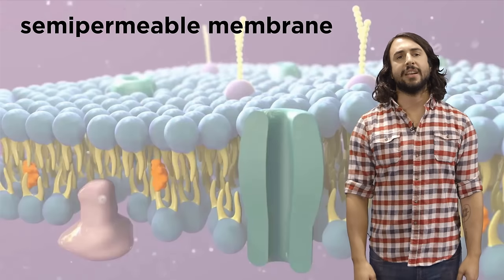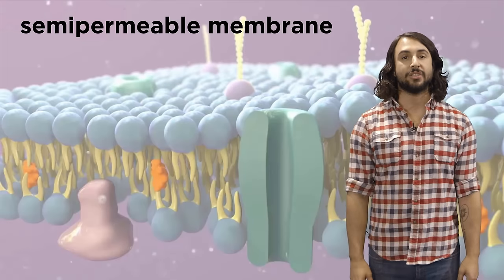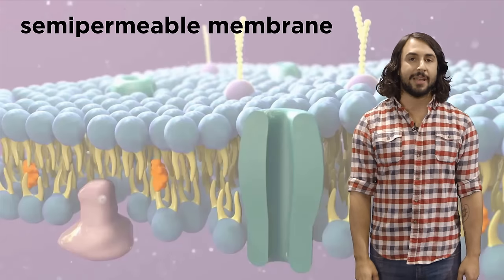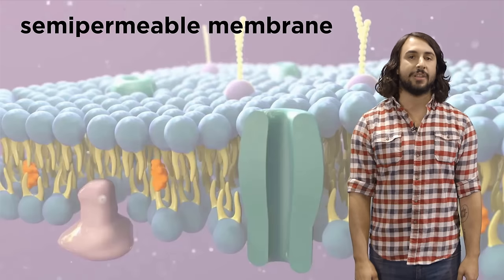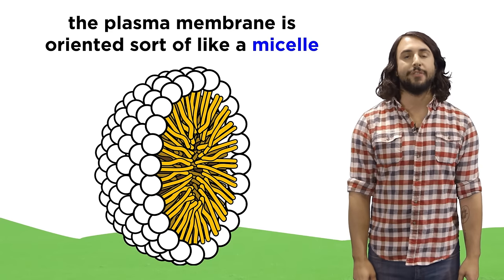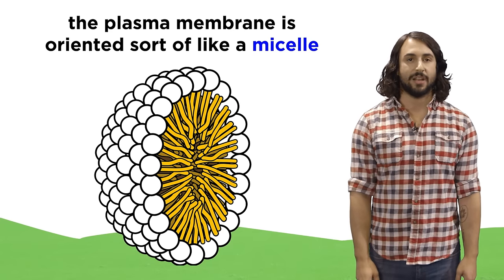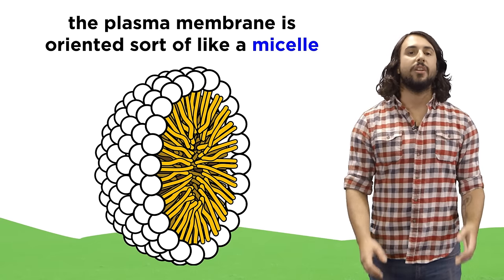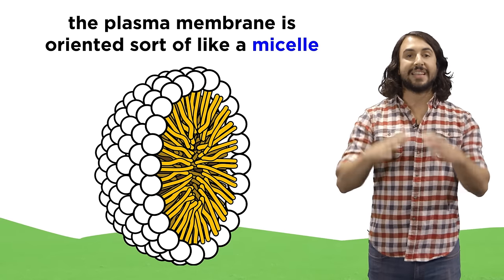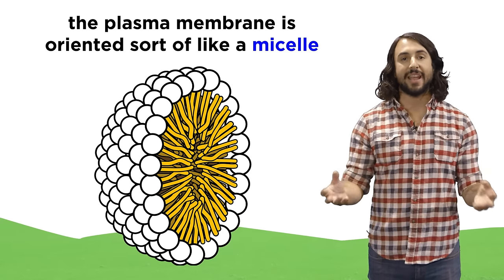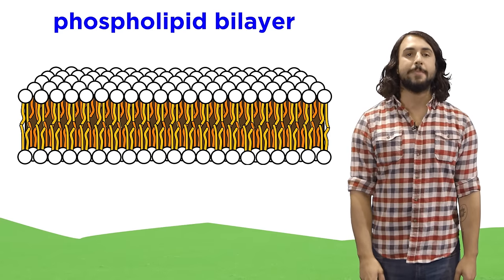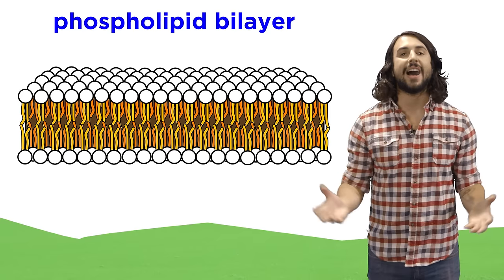The cell membrane is semi-permeable, meaning it lets some things through while preventing others. Now that we know about lipids, we are ready to understand this outermost layer of the cell in more detail. The structure of the plasma membrane is similar to the soap micelles we learned about, where the molecules arrange themselves with the hydrophilic heads facing out and the hydrophobic tails pointing in, except that instead of a micelle it is a phospholipid bilayer that engulfs the contents of the cell.